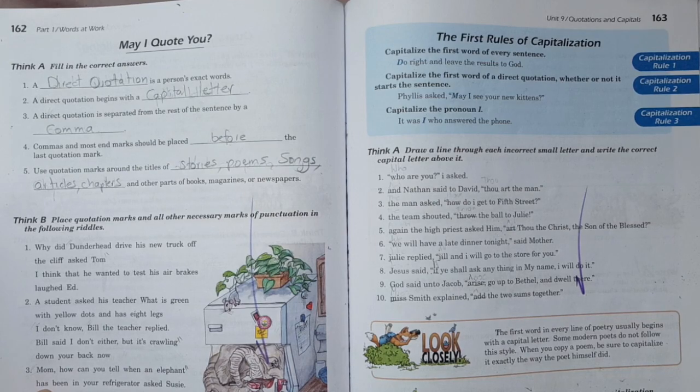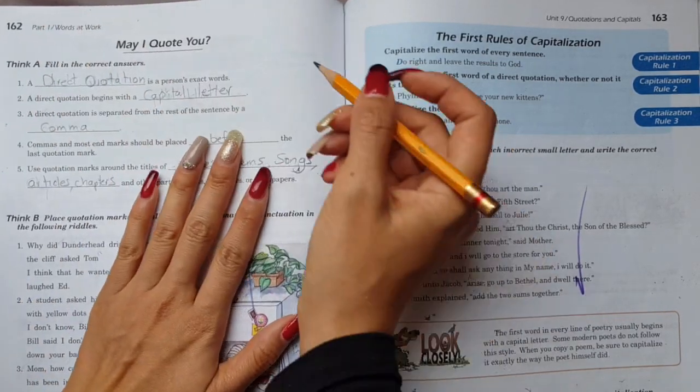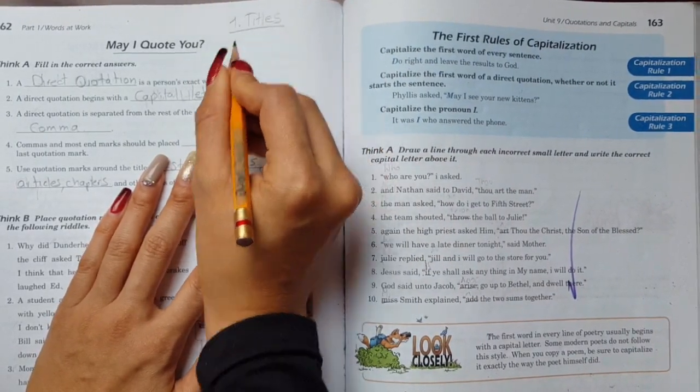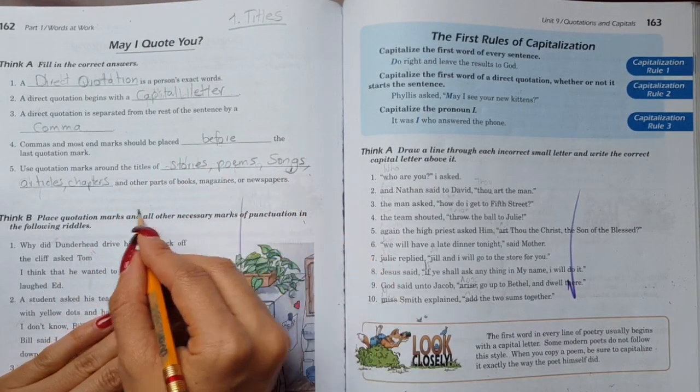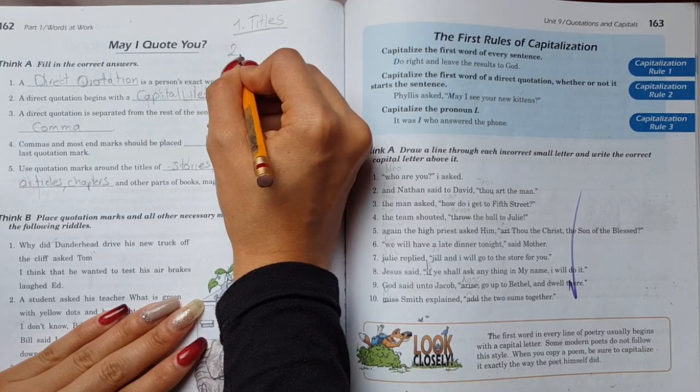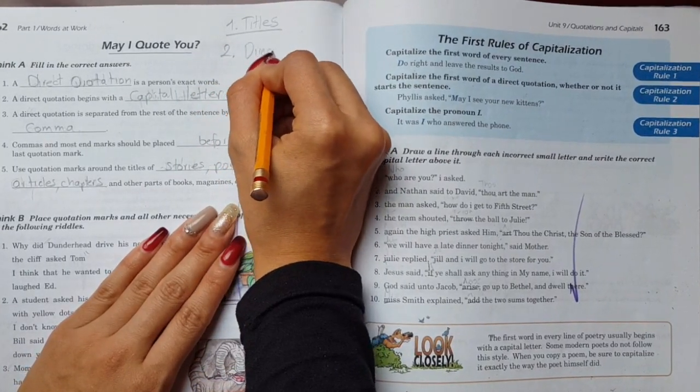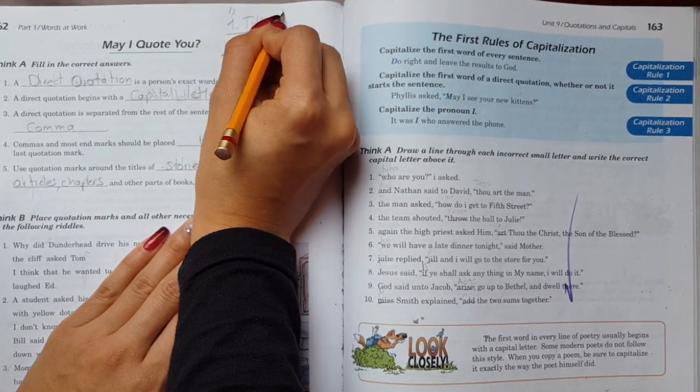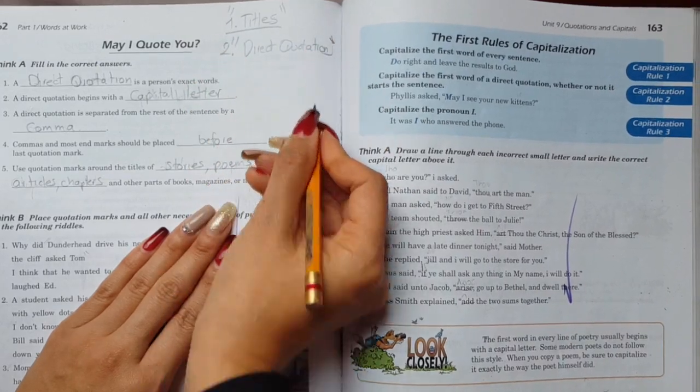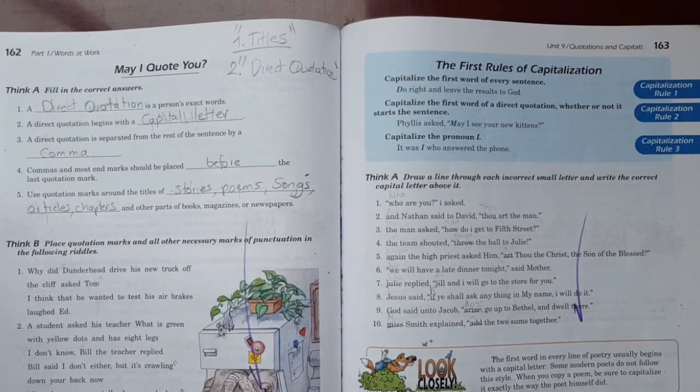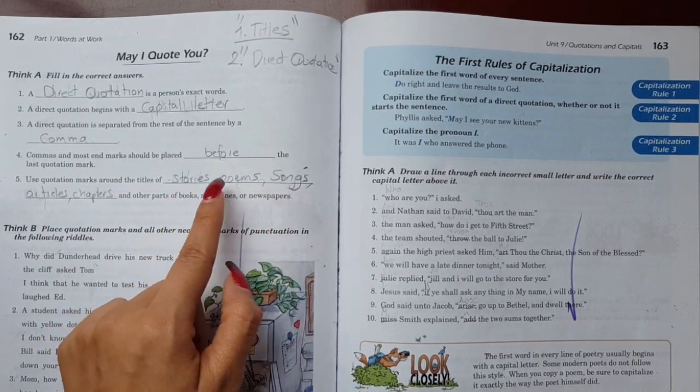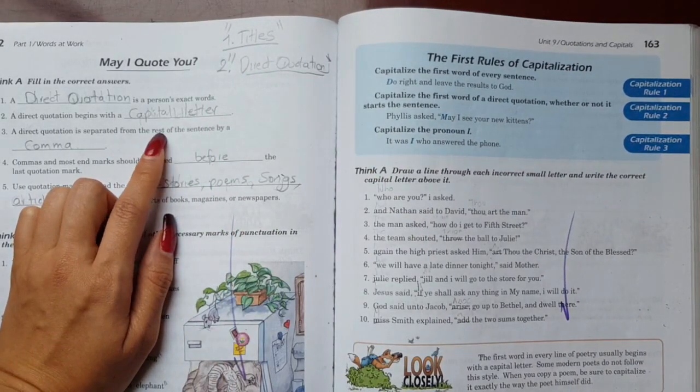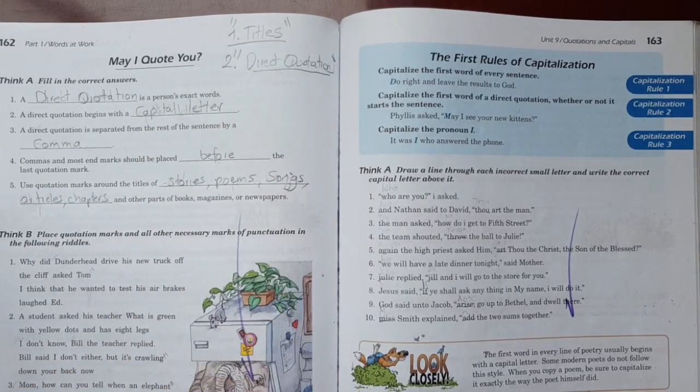So here we are doing a small review about quotation marks, the famous quotation marks that are used in two cases. One case is titles, referring to titles of these types of stories, poems, songs, and direct quotation when we are talking about the exact words that a person says.